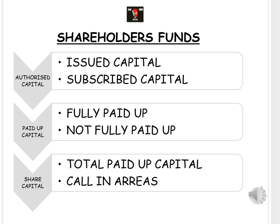Sometimes, despite warnings and notifications, shareholders may fail to pay the money due on their shares. Those amounts are recorded in an account called calls in arrears — the amount still pending from shareholders. The total paid-up capital is the amount already received. Together, these represent the current share capital of the company for that financial year.